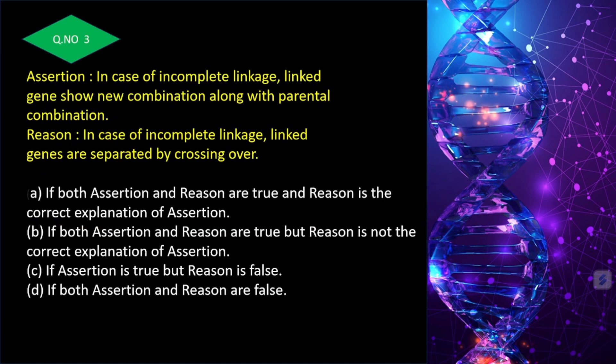In case of incomplete linkage, linked genes show new combinations along with parental combinations because crossing over can occur. The linked genes are separated by crossing over — this is also correct. Both assertion and reason are correct, and reason is the correct explanation — answer is A.